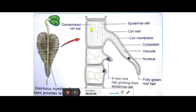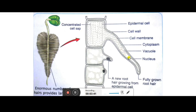Cell sap is the liquid inside the vacuole. When it is outside the plant it is known as simple water, but as it goes inside and is absorbed it changes into cell sap because many minerals become involved along with it. Here you can see a small structure — that is a root hair growing from the epidermal cell. The epidermal layer is the outer layer present on the outer circle of the root.